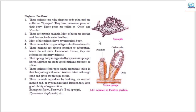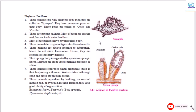Examples of Porifera are: Sycon, Euspongia (bath sponge), Hyalonema, Euplectella, etc.